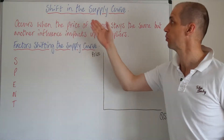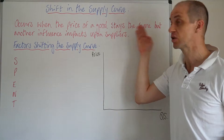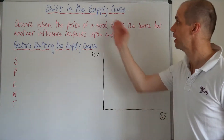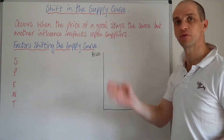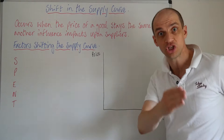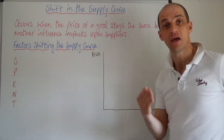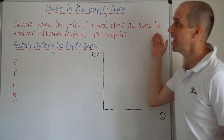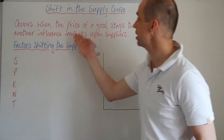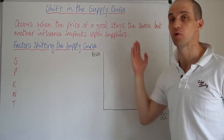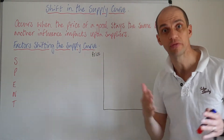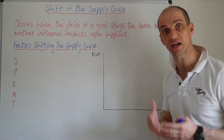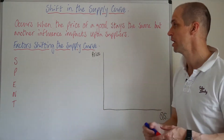This will occur when the price of a good stays the same — that's the crucial factor. Because when the price of a good changes, that's when we'll see a movement along. But here, another influence impacts upon suppliers who are the firms, the businesses actually providing these goods.